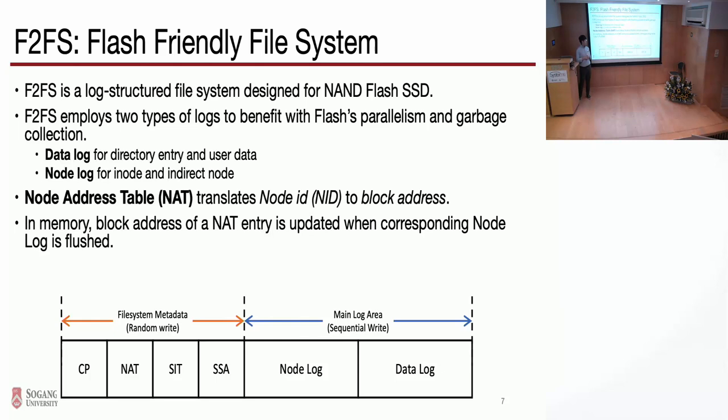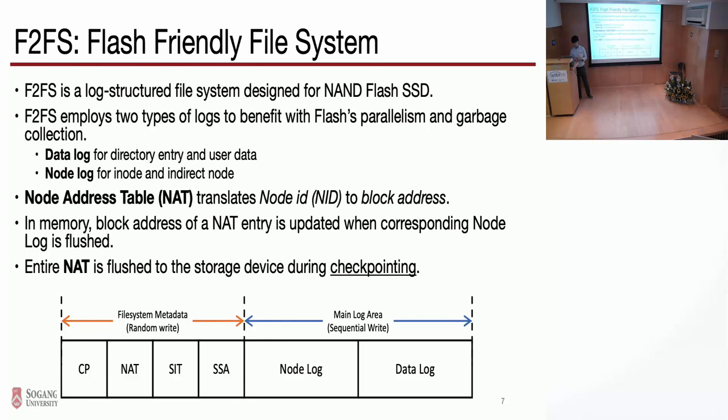In memory, the block address of a certain NAT entry is updated when the corresponding node log entry is flushed. The entire NAT entry in memory is flushed to the storage device during the checkpointing of F2FS.